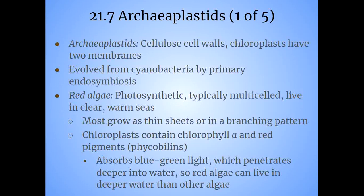When red algae grows, it grows as a sheet with little branching patterns — if you've ever looked at nori, you can see that structure. The reason it is called red algae is because it has chlorophyll A and red pigments known as phycobillins. This pigment constitution allows it to absorb blue-green light, which penetrates deeper in the water, allowing red algae to live deeper than any other algae. It's a great example of how structure helps function and allows an organism to live in its environment.